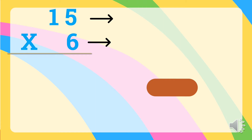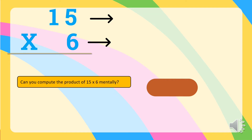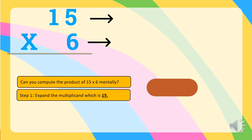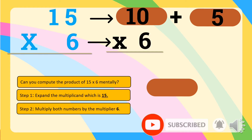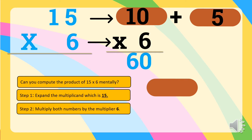Let's have another example. Let's multiply 15 and 6. Can you compute the product of 15 and 6 mentally? Step one is to expand the multiplicand, which is 15. Let's expand 15: it is 10 plus 5. Step two is to multiply both numbers by the multiplier 6. So 10 times 6 is equal to 60. Next, 5 times 6 is equal to 30.